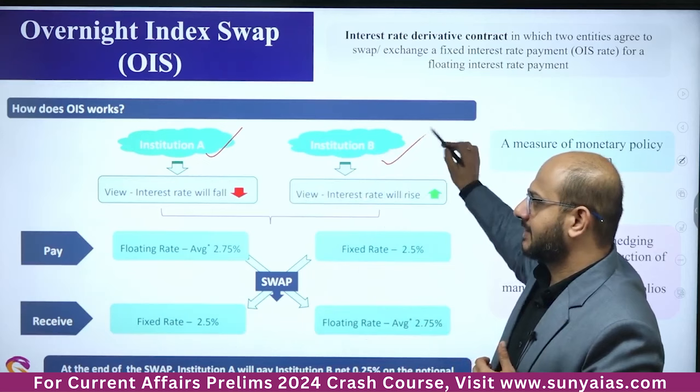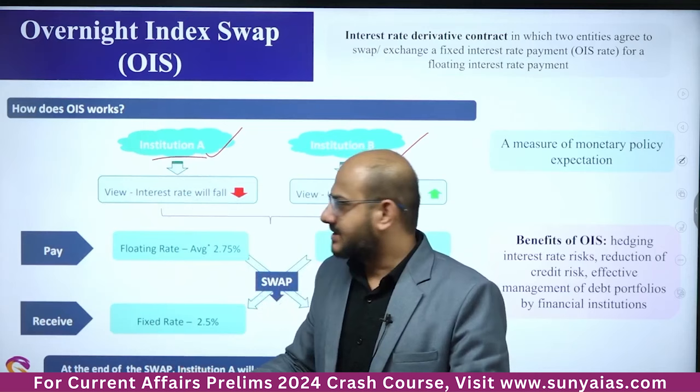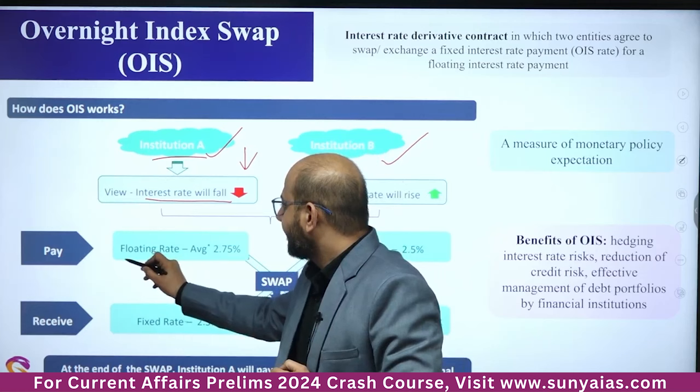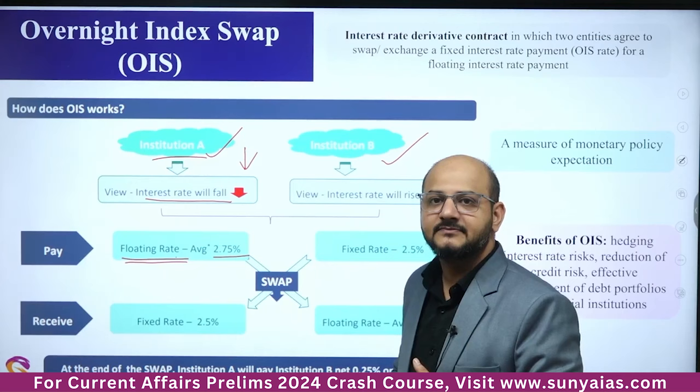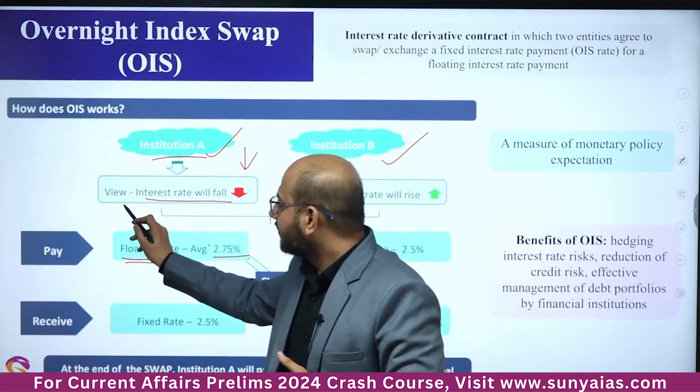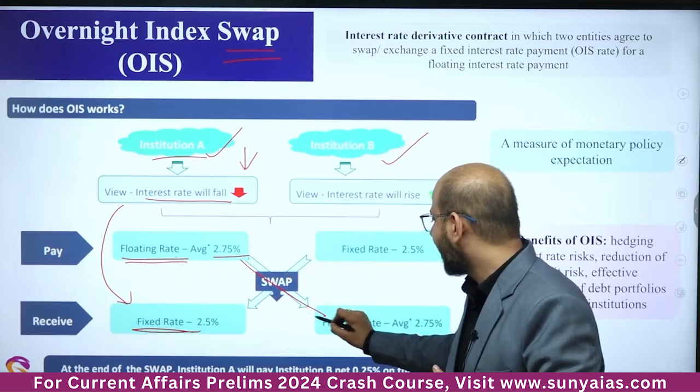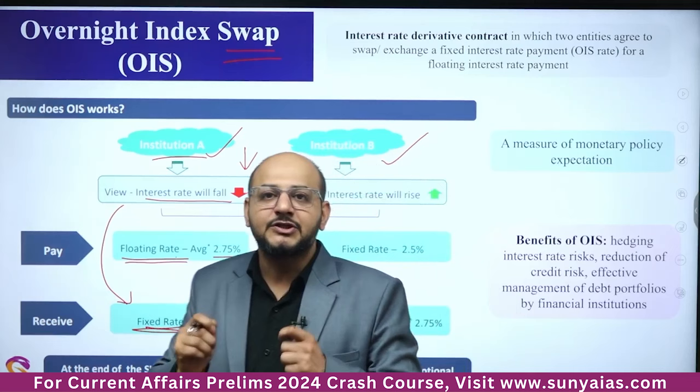Institution A and Institution B. Institution A's view of the present economy is that interest rates will fall. Previously it had a floating interest rate of 2.75%. Because it believes interest rates are going to fall, it will switch — or swap — towards a fixed interest rate. This is called a swap.